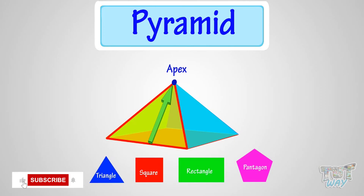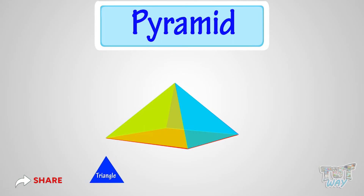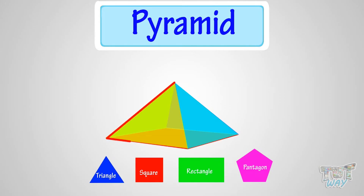To repeat: a pyramid has a single base which can be of any polygon shape, like triangle, square, or rectangle. And all other faces are triangle in shape, that converge to a single point at the top, which is called its apex.